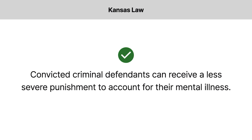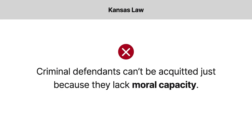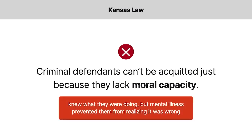Convicted criminal defendants could also receive a less severe punishment to account for their mental illness. But criminal defendants couldn't be acquitted just because they lacked moral capacity, meaning that they knew exactly what they were doing, but their mental illness prevented them from realizing that it was wrong.